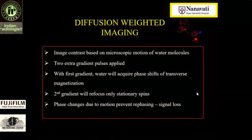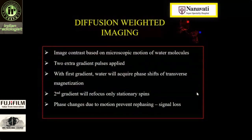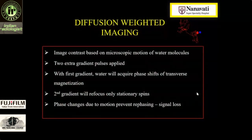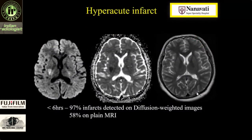Diffusion weighted imaging is the stroke sequence. It is based upon the microscopic motions of water molecules. It is a very fast, rapid sequence — we complete diffusion in about 40 seconds on our 3 Tesla scanner. We always use a B value of 2000; we try not to waste time with a B value of 1000 and go directly for 2000. Diffusion is very sensitive and can pick up hyperacute infarcts that are only seen as restricted diffusion areas and not seen on T2 or FLAIR images.